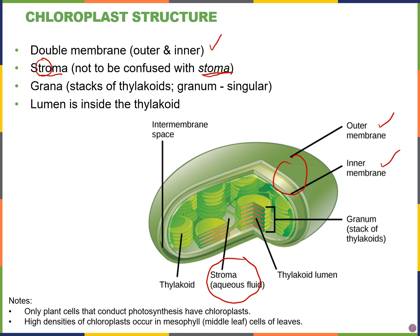Grana are stacks of thylakoids — that's the plural version. One stack of thylakoids is a granum. Inside the thylakoid is the lumen — the space inside the thylakoid is called the lumen of the thylakoid. Remember that only plant cells that go through photosynthesis will have these chloroplast organelles, and they're mostly found in those mesophyll cells, the middle leaf cells.